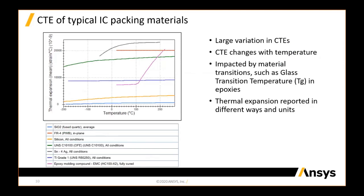Here we have a chart generated from one of our data products showing some of the materials mainly used in IC packages. It shows the thermal expansion coefficient and how it varies over temperature. You can see that not only are there large differences in CTE — covering three to four orders of magnitude — but there are also considerable changes with temperature. As you can see by this purple line, which is an epoxy molding resin, those changes in thermal expansion can change considerably if the material goes through a transition, in this case the epoxy's glass transition temperature.